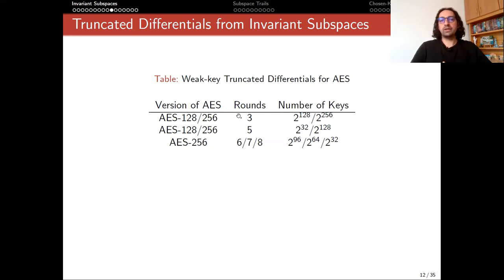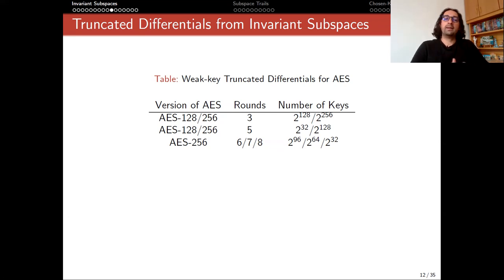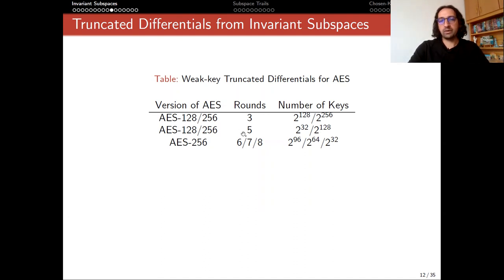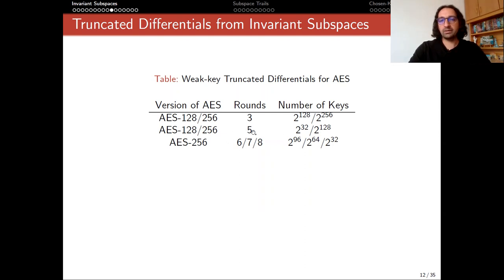Our idea is to use our invariant subspaces to have longer distinguishers, but they will work only under weak keys. We assume that the person using AES accidentally chose a weak key. The invariant subspaces we have found show that we can have five-round truncated differentials for AES-128. This five-round distinguisher works only for 2^32 different keys, where all of the columns of the secret key have to be identical.